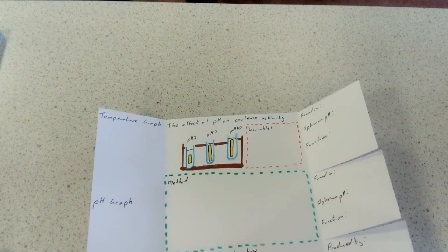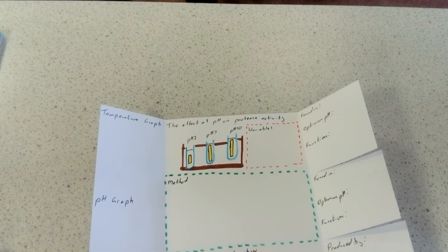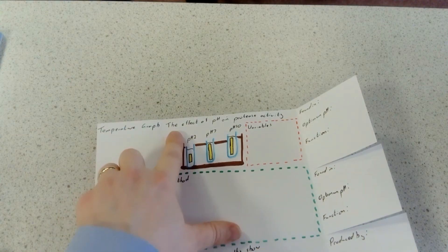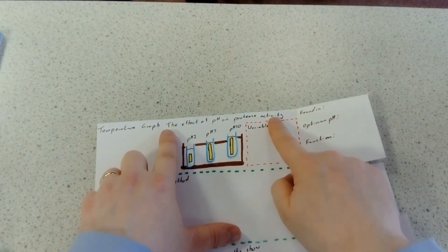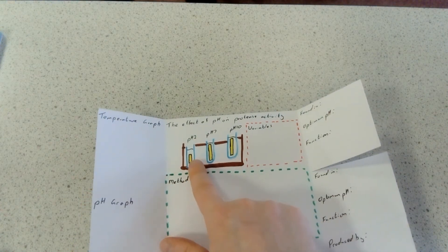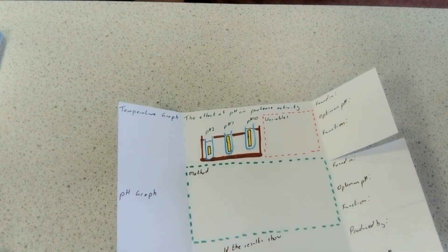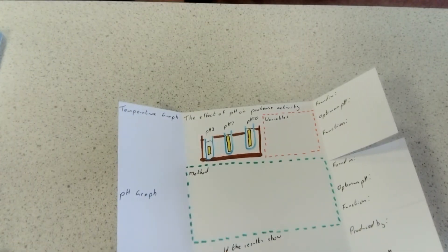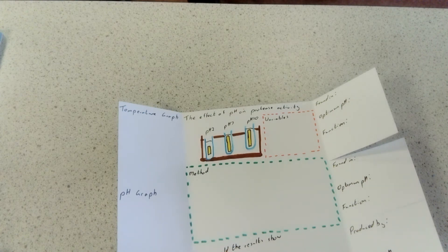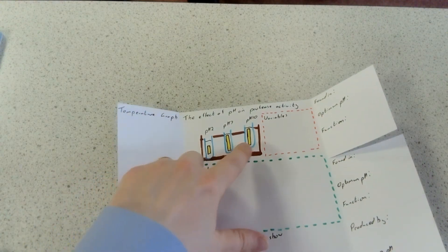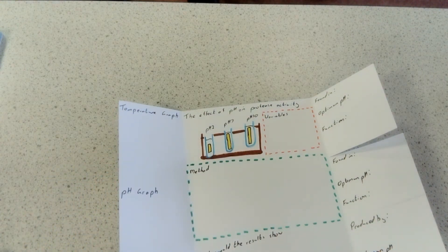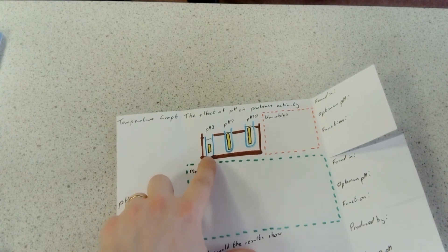Then in the middle, I want you to be thinking about this investigation. If you're looking at the effect of pH on protease activity, you're given three test tubes and pieces of boiled egg or whatever. In any experiment, that will represent the amount of protein.